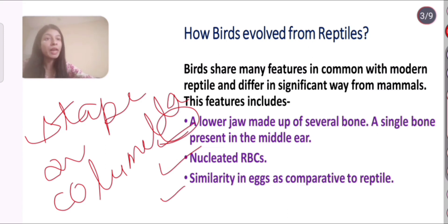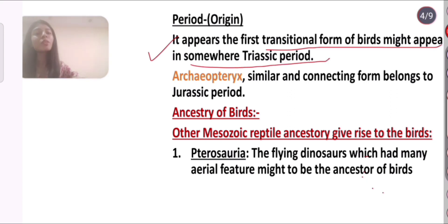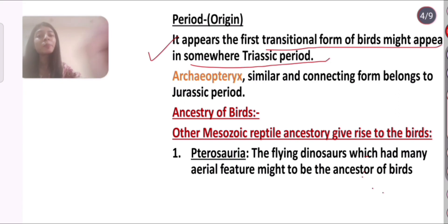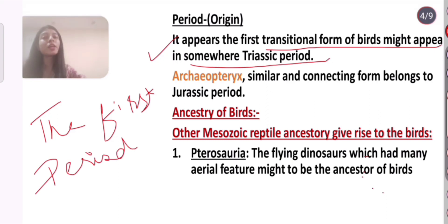Regarding the period of origin of birds, it appears the first transitional form of birds might have appeared somewhere in the Triassic period. The Triassic period is the first period of the Mesozoic era, beginning almost 250 million years ago.